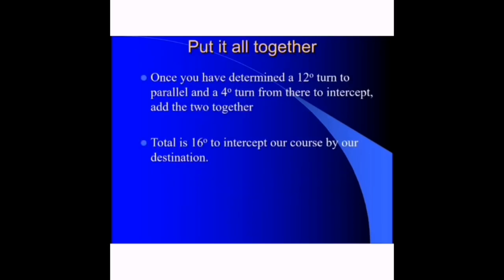To fly to point Bravo, we need to add the track error which was getting us to the parallel track and the correction angle to intercept our destination. We add 12 and 4, and the total is 16 degrees to intercept our course to the destination. Therefore, we need to offset the course by 16 degrees to fly to point Bravo.